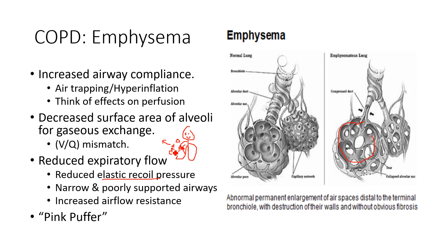At the end of expiration, at the FRC, the inward pull of the lungs and the outward pull of the chest wall are at equilibrium — balanced — which creates that negative pressure in the pleura. If we reduce the inward pull, that's going to shift the equilibrium point towards favoring the chest wall, favoring expansion even at rest. That equilibrium point FRC — that's the point at the end of a quiet expiration — partially explains the changes we see in the lungs.